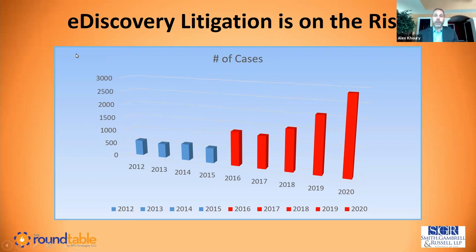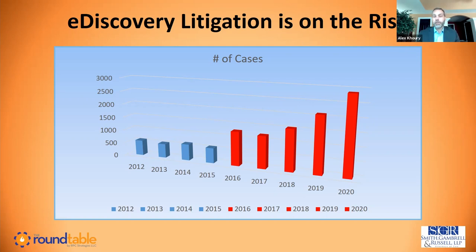The federal rules of civil procedure were amended in December of 2015. One of the intended purposes was to help reduce the rising number of eDiscovery cases clogging up the court system. The theory was that guidelines, rules to follow, and encouraging judges to get involved more early in the case would actually cause eDiscovery litigation to go down. As we can see from the chart of eDiscovery cases over the past decade, the number actually went up dramatically after 2015. Although some of the more severe sanctions such as adverse inferences or dismissals are generally down, the actual amount of litigation on eDiscovery issues has increased — which is why ECA is more important now than ever.